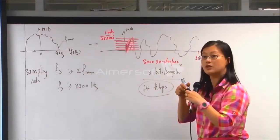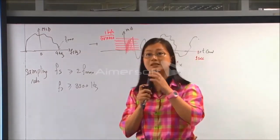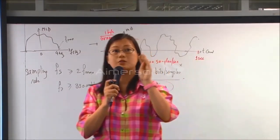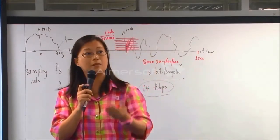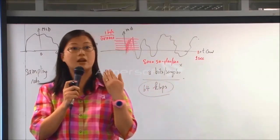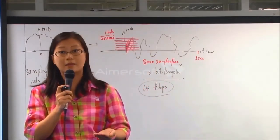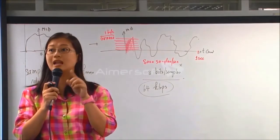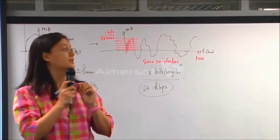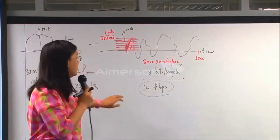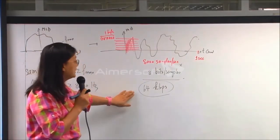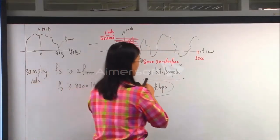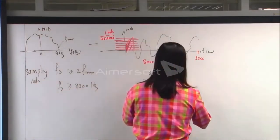So you have to send 64 kbps. In one second, PCM sampling generates 8,000 samples; each sample needs 8 bits, giving 64 kbps. This is one voice channel.